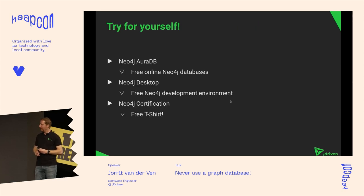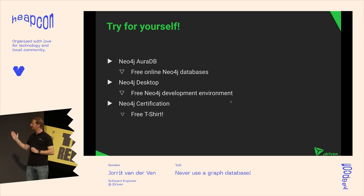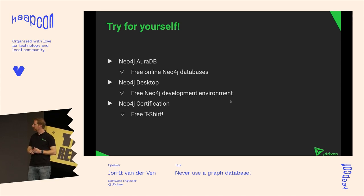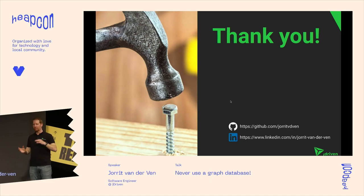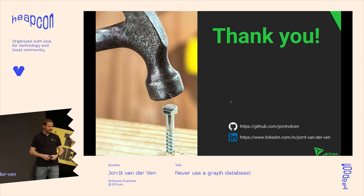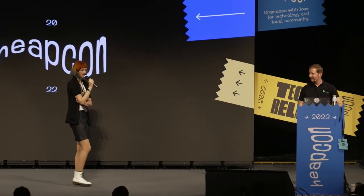If you want to try it yourself, the nice thing about Neo4j is that almost everything is free to start. You can create your own database in Neo4j Aura for free, and if you want to scale it up you'll probably have to pay. Neo4j Desktop is a great development environment. You can also get a free Neo4j certification and even a free T-shirt if you pass it — what's not to like? That's it for me. I hope I've given you enough information to put a new tool in your toolbox. If you happen to find a graph problem, you'll recognize it and think: maybe I should try this out.